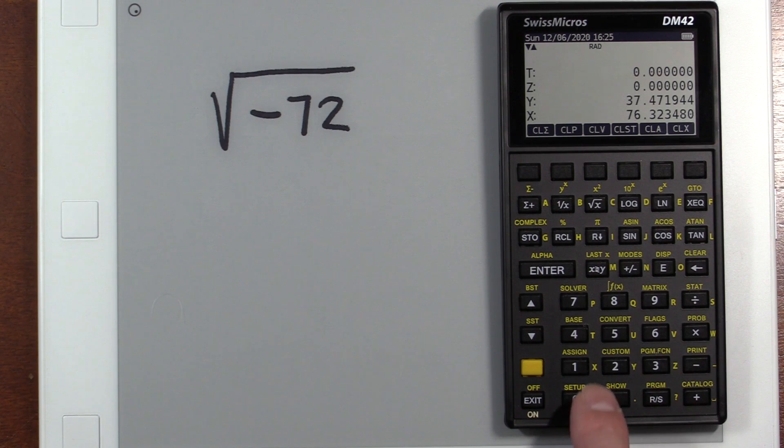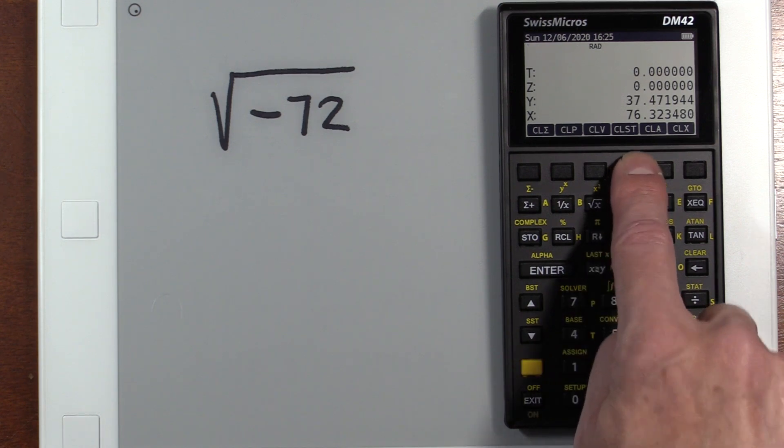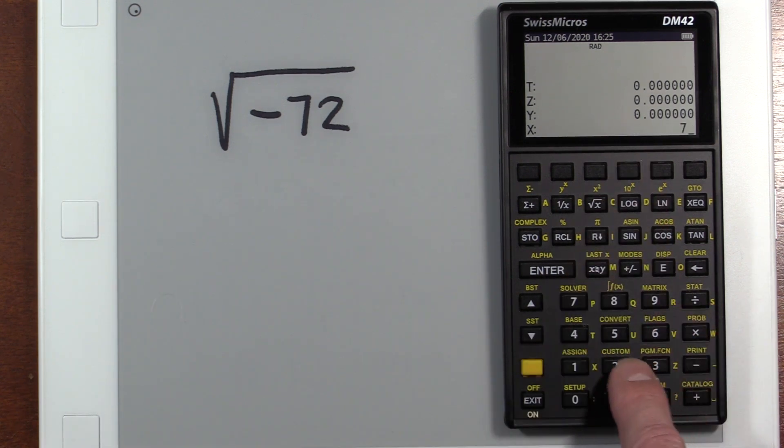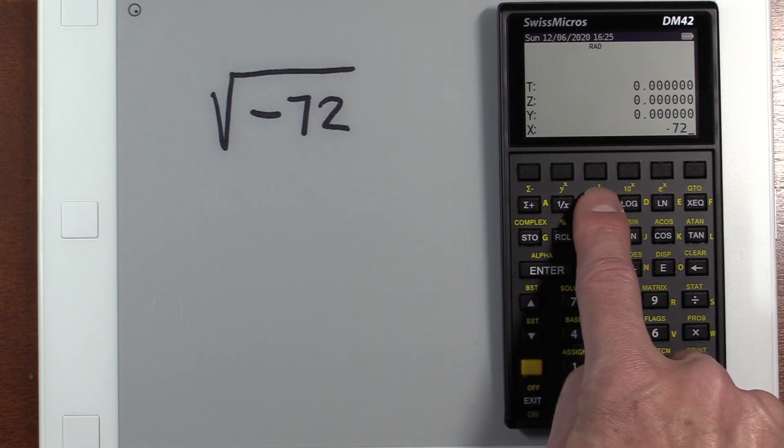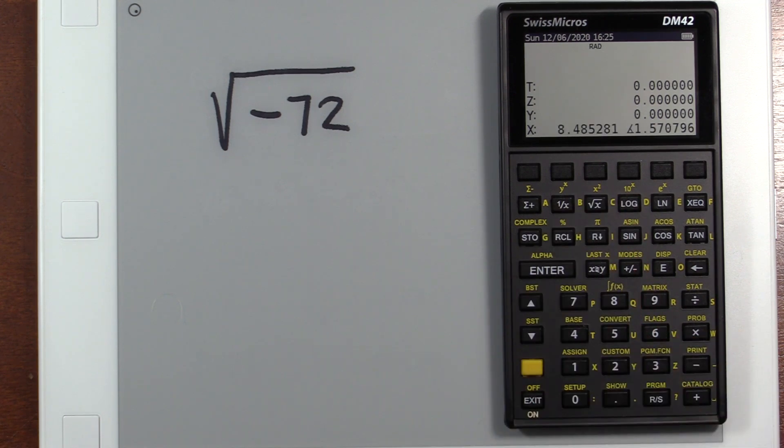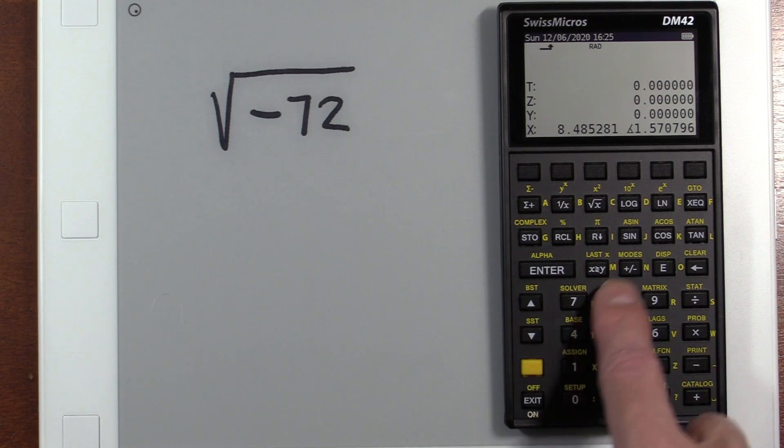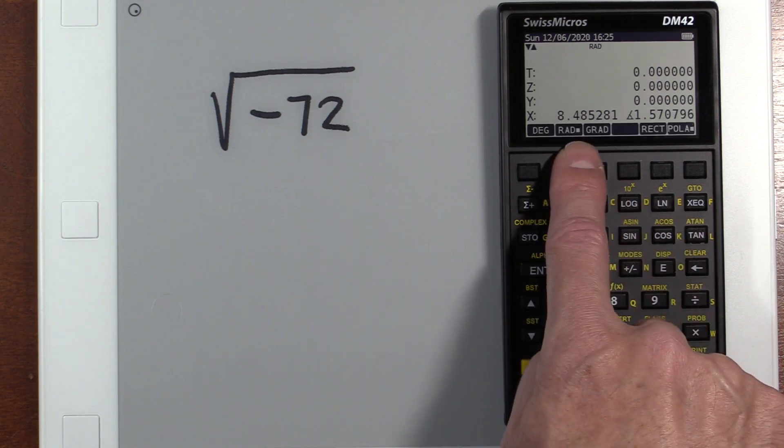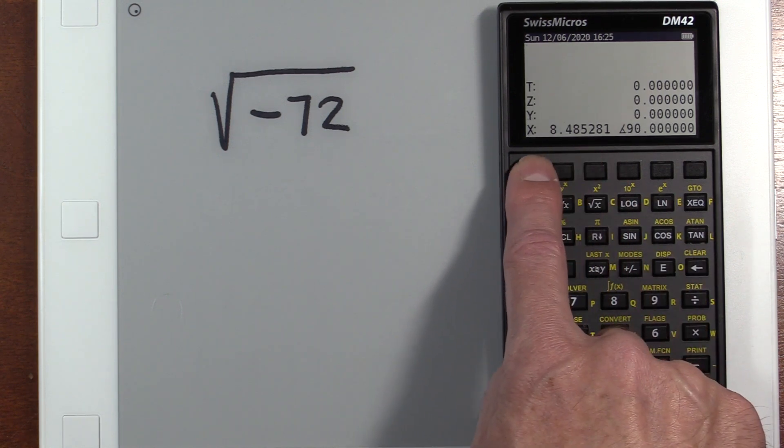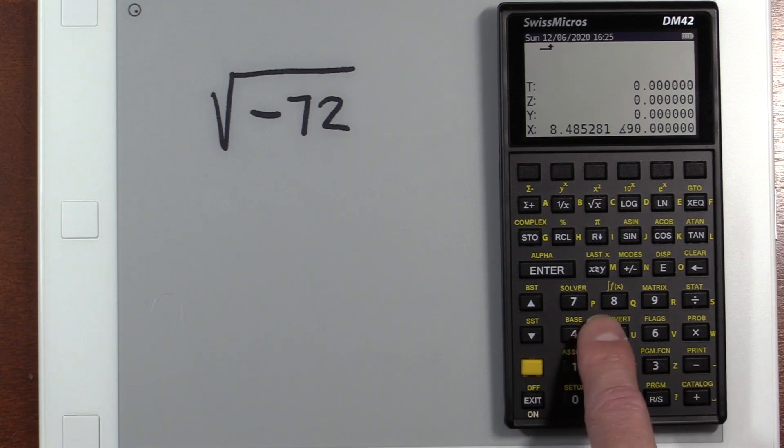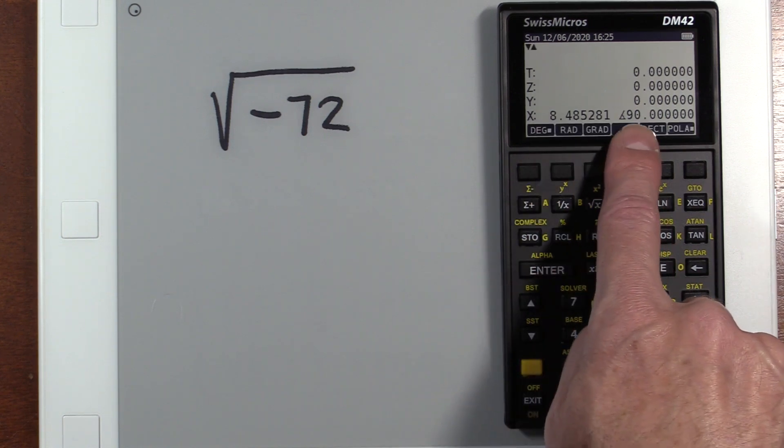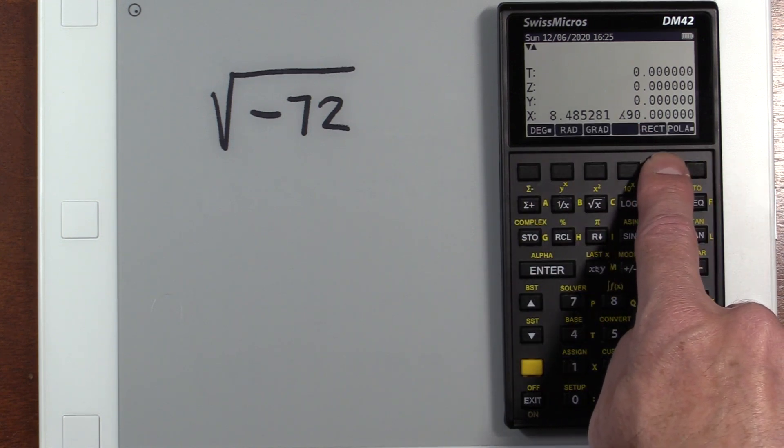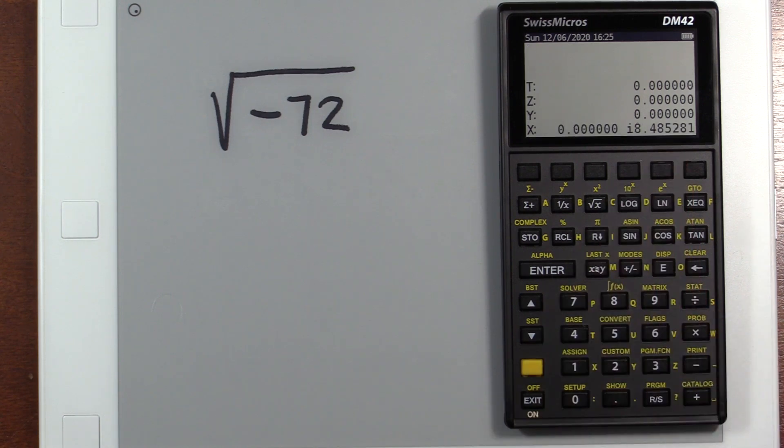All right. Let's do a few more things here. Let's do the square root of negative 72. We do 72, negative, square root. We get our answer. Oops, I'm still in radians. I didn't want that. I wanted degrees. And notice it's dynamic. I didn't want that. I wanted rectangular. And we get our answer. 8.485i. Really like how that works.